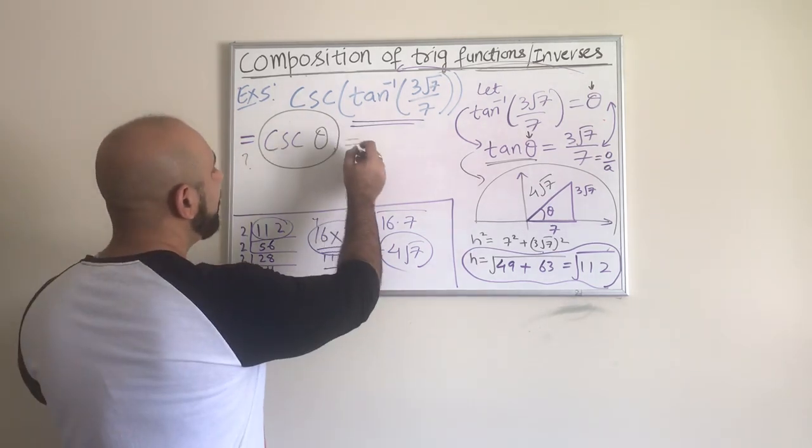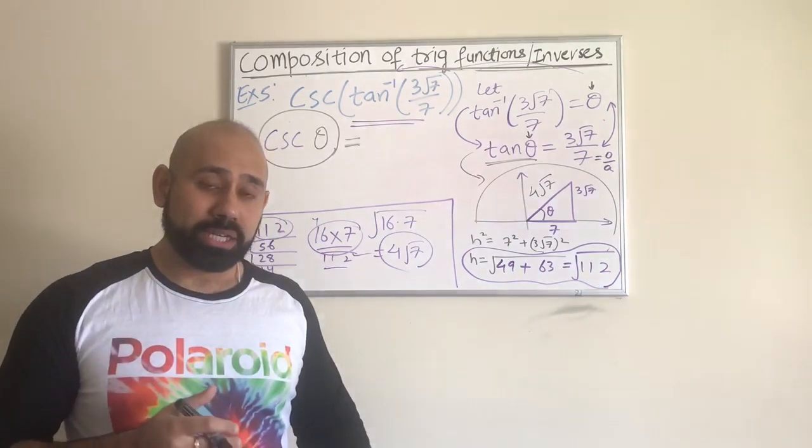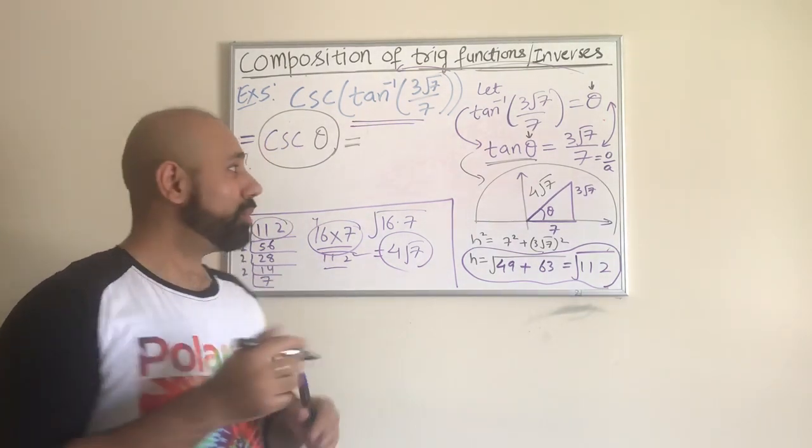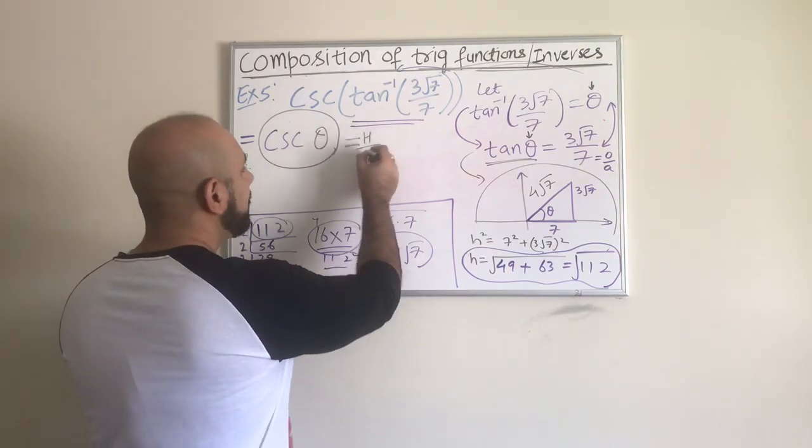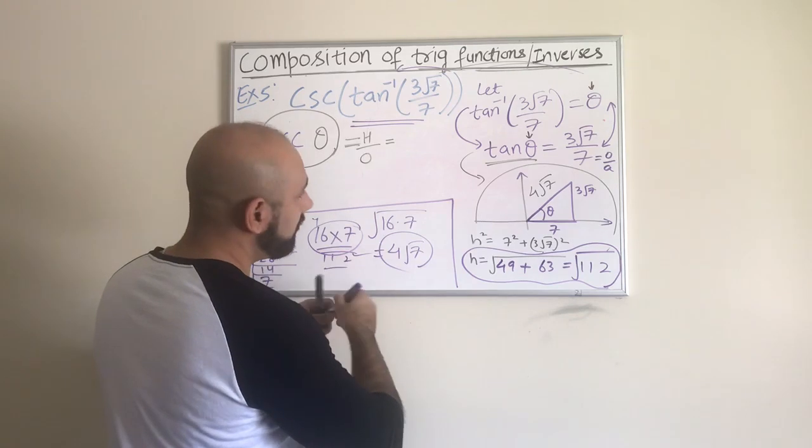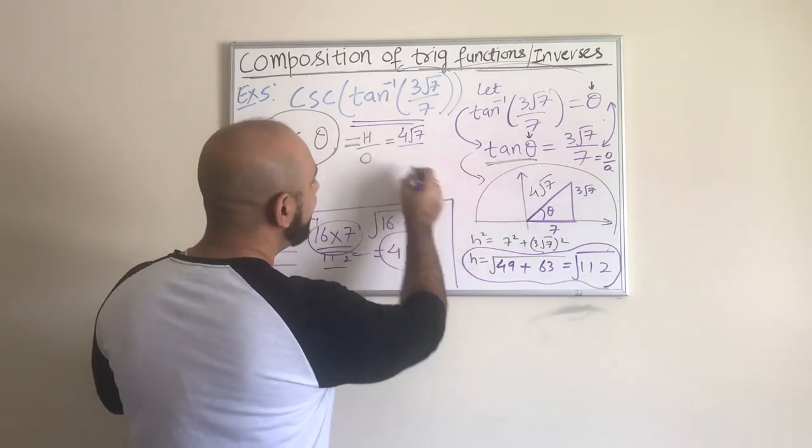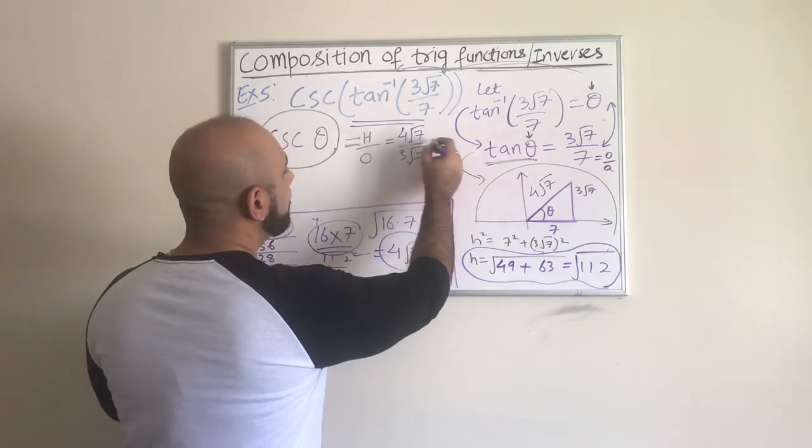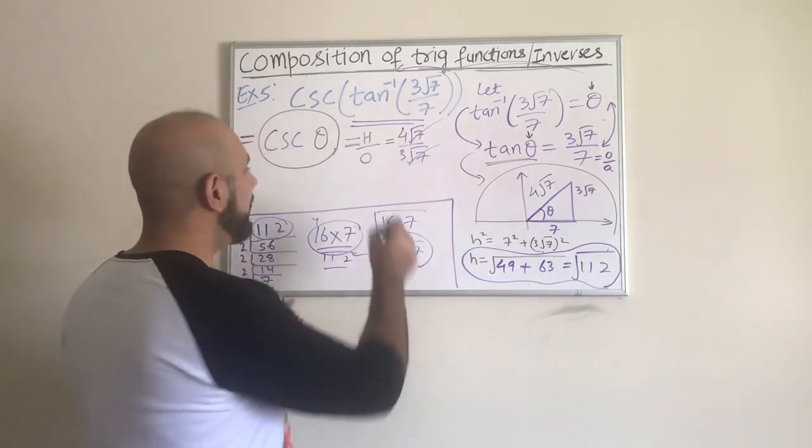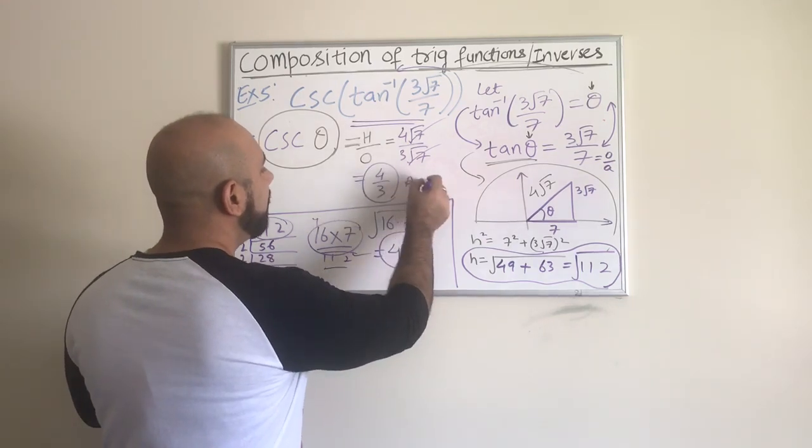We have the hypotenuse now. Cosecant theta we know is the reciprocal of sine. Sine is opposite over hypotenuse, so cosecant would be hypotenuse over opposite. What is hypotenuse? It's 4√7. Opposite is 3√7. √7 and √7 will just cross out and I'm only left with 4/3.